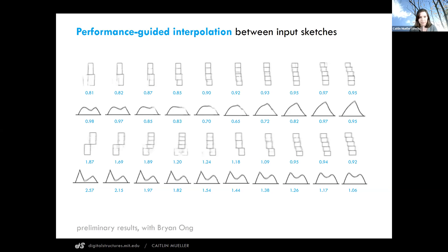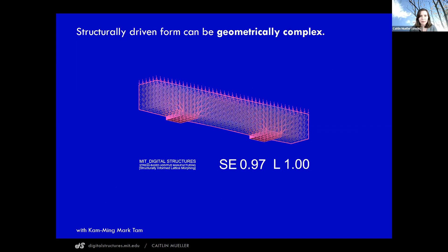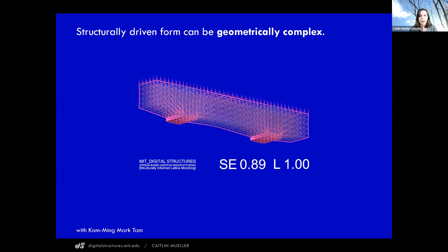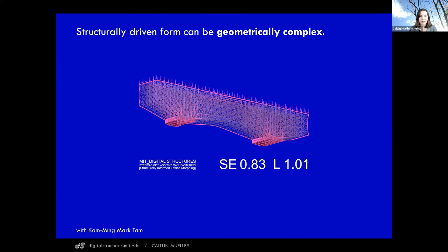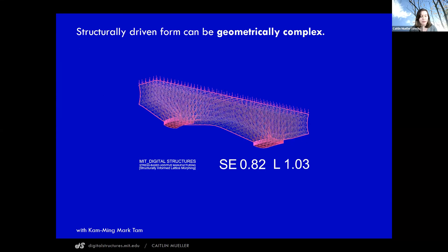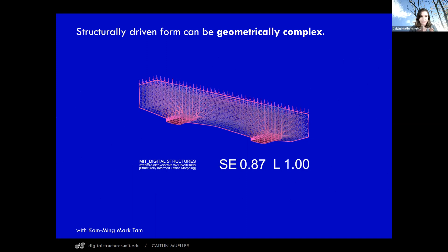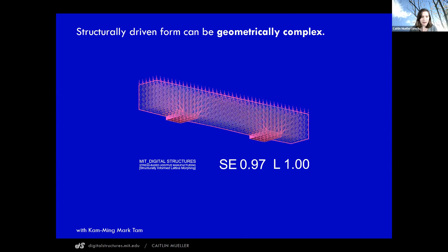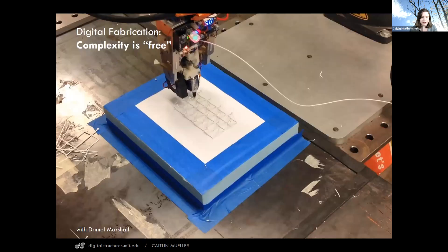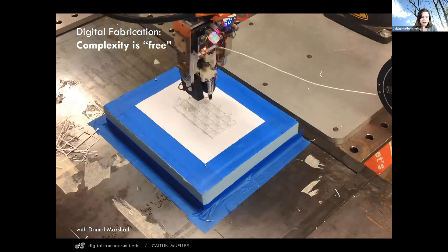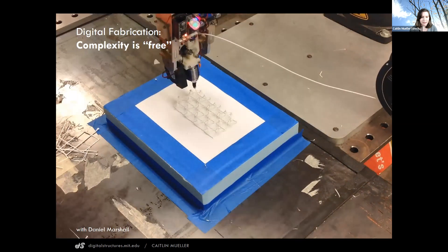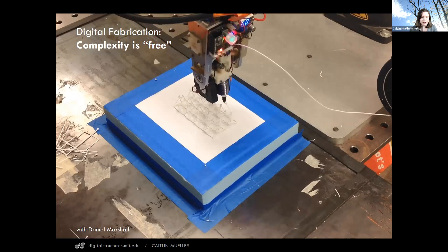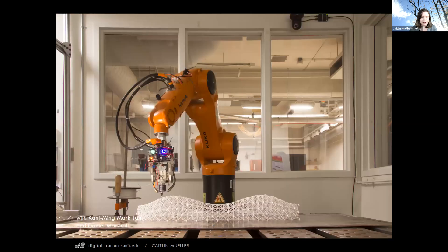I'm currently working on this research with graduate students in my group. I'm also interested in questions of geometrical complexity that emerges from structurally driven geometric generative processes. As a spanning structure becomes more and more efficient, every node becomes different and every member has a different length. Digital fabrication is one way to address this challenge — these structures would be really expensive to build with conventional construction processes, but with digital fabrication, for example this extruder mounted on a six-axis robotic arm, it's just as easy to make every node different and every member a different length.